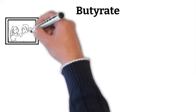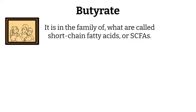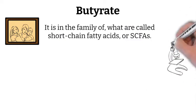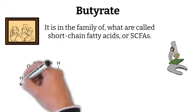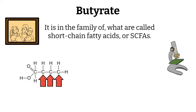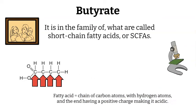Butyrate is in the family of what are called short-chain fatty acids. A fatty acid is a chain of carbon atoms — in this case four for butyrate — attached to which are hydrogen atoms, and ends with a double-bonded oxygen and an oxygen-hydrogen group.